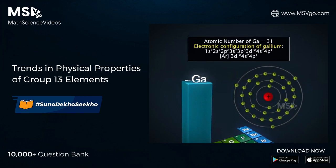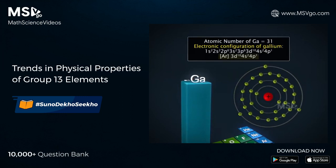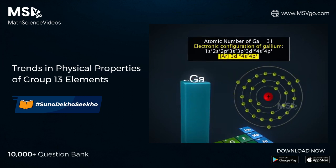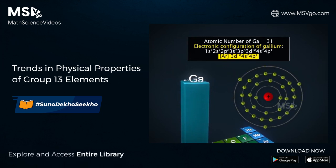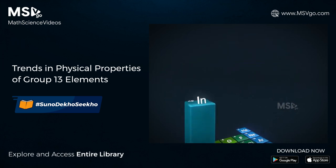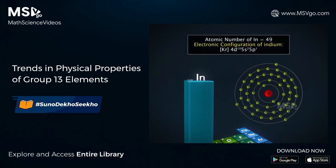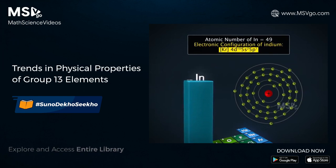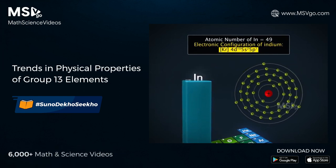The atomic number of gallium is 31. It has an argon core plus 3d¹⁰, 4s² and 4p¹ electrons. Indium with atomic number 49 has a krypton core plus 4d¹⁰, 5s² and 5p¹ electrons.